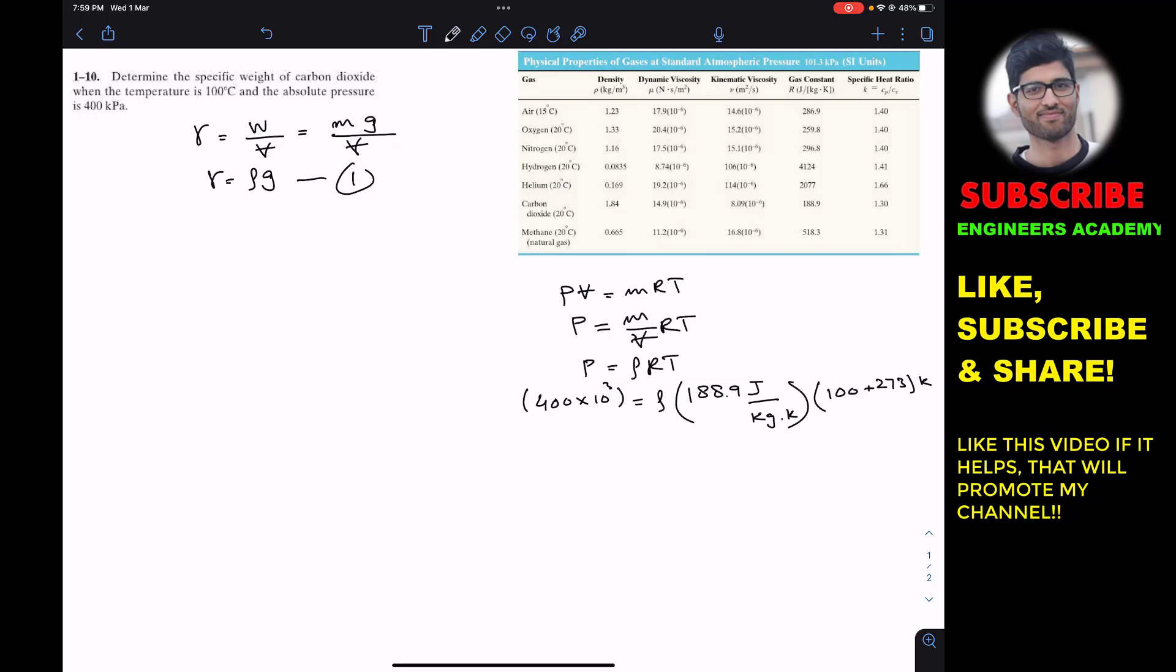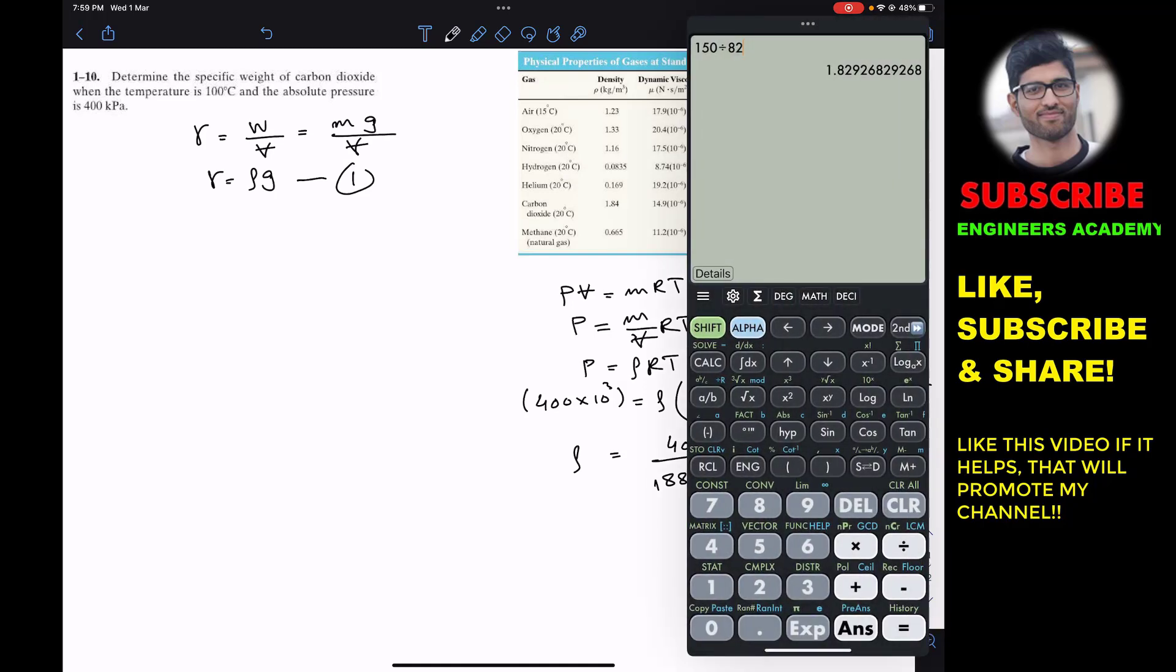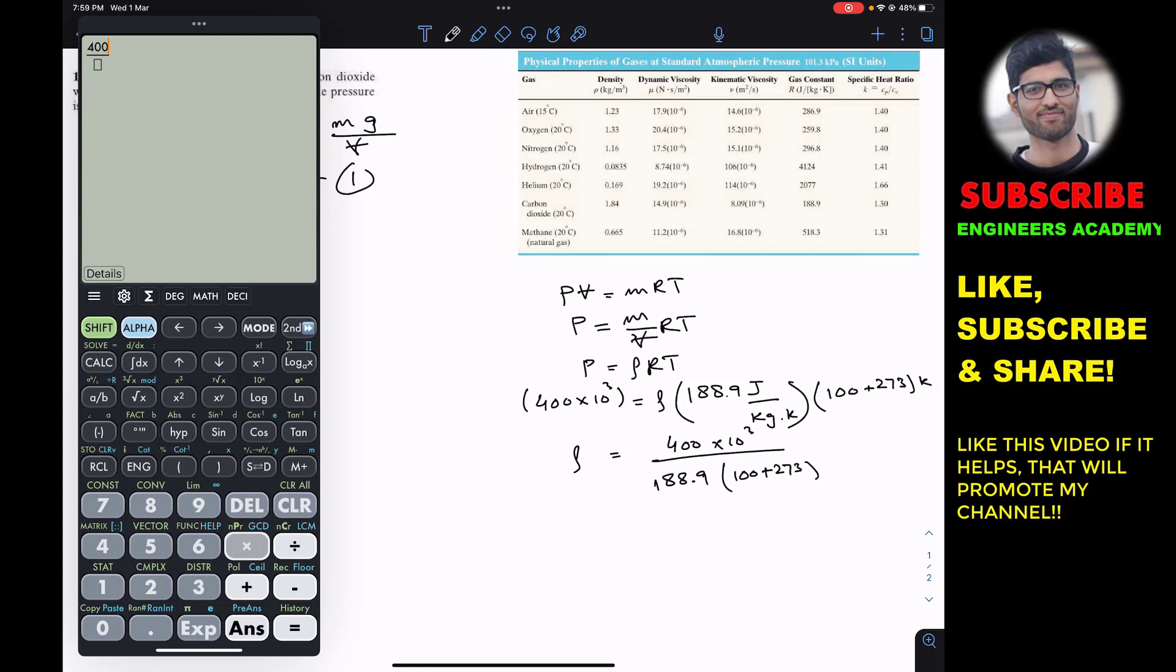Now we will get the density. The density will be equal to 400 times 10 to the power 3 divided by the R value, which is 188.9, divided by the temperature. This will be 400 multiplied by 10 to the power 3 divided by 188.9 multiplied by 373. This gives us the density, which is 5.677 kg per meter cube.